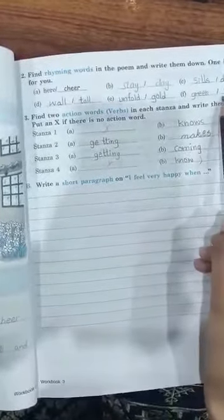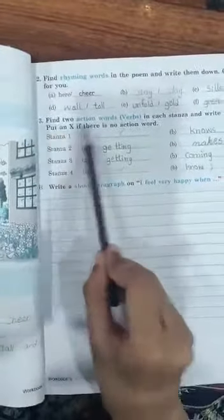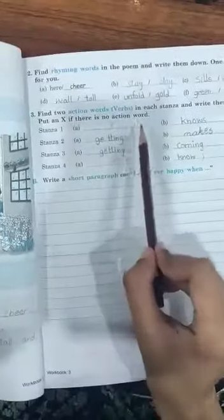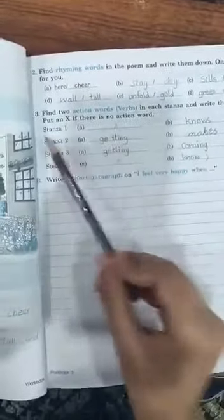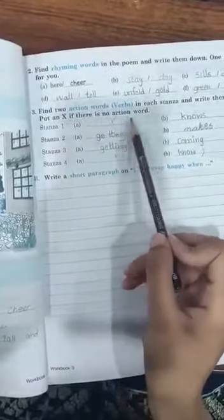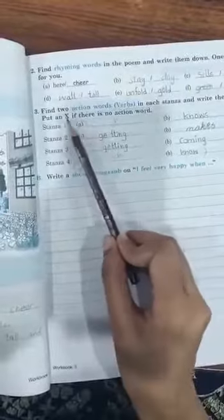Question number 3 is about action words, or verbs. You have to find out the verbs in each stanza from the poem and write them down. Put an X if there is no action word. If any stanza has no action word or verb, then you can cross it.